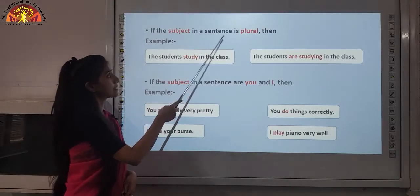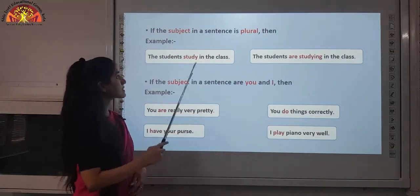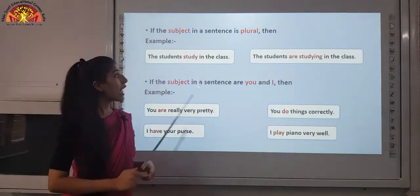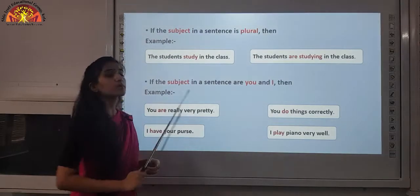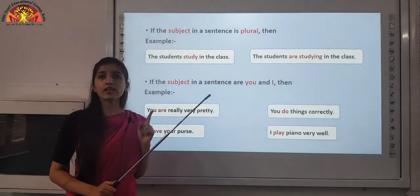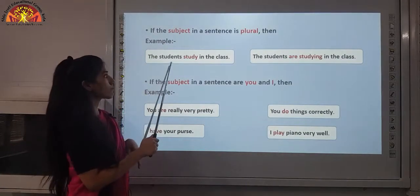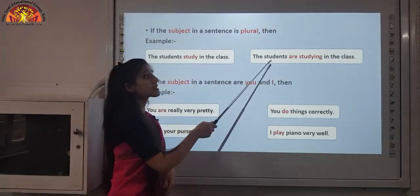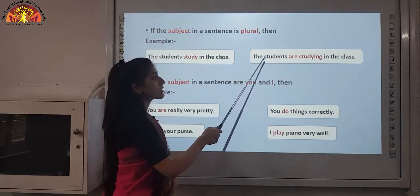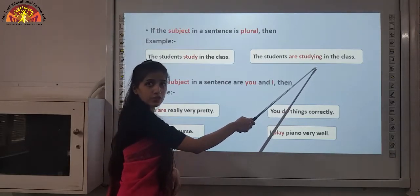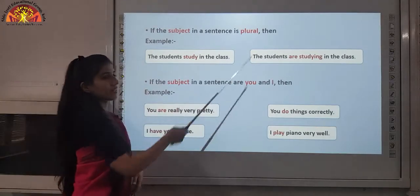If the subject in a sentence is plural, let's look at an example: the students study in the class. Here students is the plural subject directly followed by the main verb, so the verb takes a singular form — that is the vice versa relationship. But in the students are studying in the class, the plural subject is not directly followed by the main verb; a helping verb comes in between, and as we know, are is used with plural subjects.